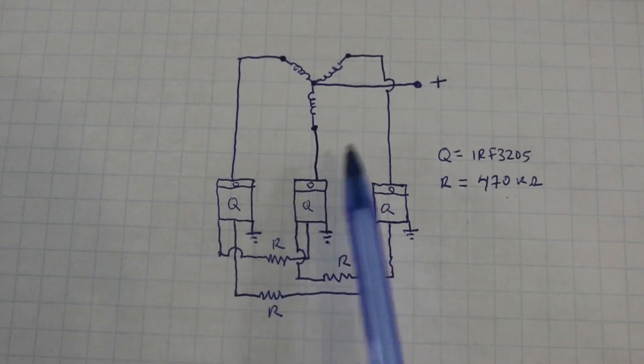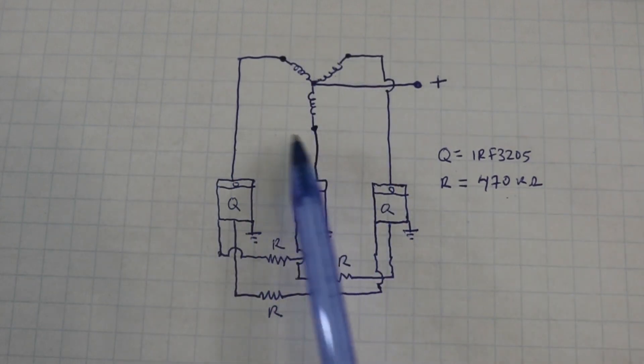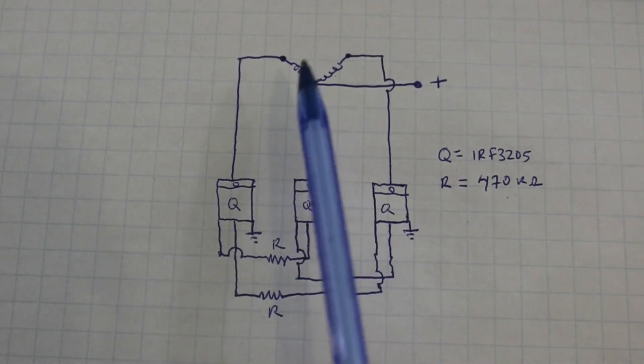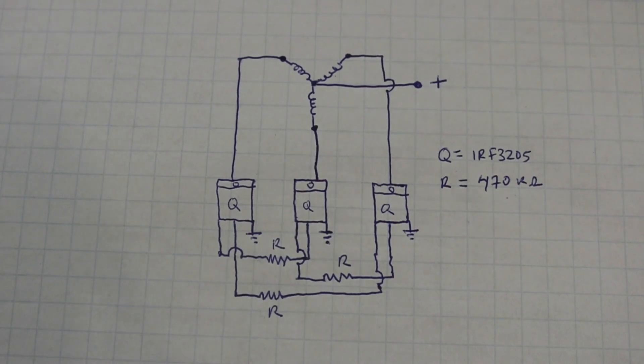Here we have the motor, the four terminals. Three of them come from the coils of the motor, and the fourth one is the center of the coils, which go to the positive of your power supply or battery.